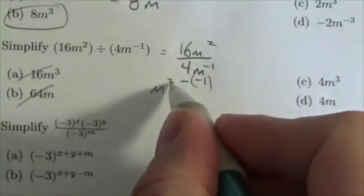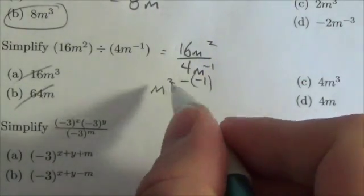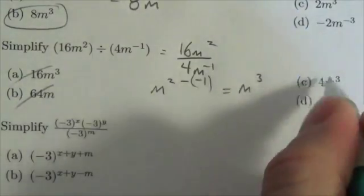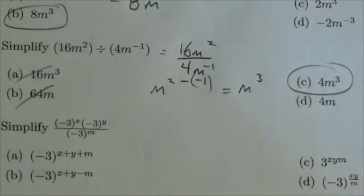So this becomes m squared, or m to the 2 minus negative 1, and that is going to be m cubed. And so my answer here is C, 4m cubed.